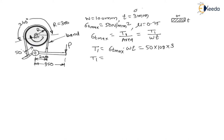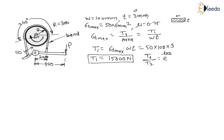Therefore T1 = 15,000 N. This is the maximum tension. We have the formula for minimum tension: tight side tension divided by loose side tension equals e to the power μθ. This is the formula for a differential band brake.